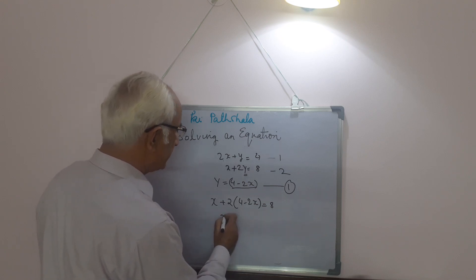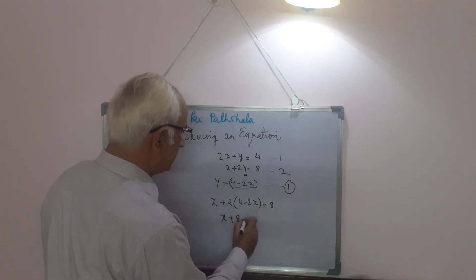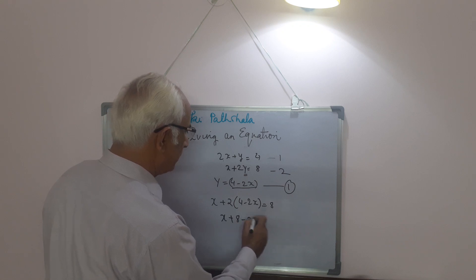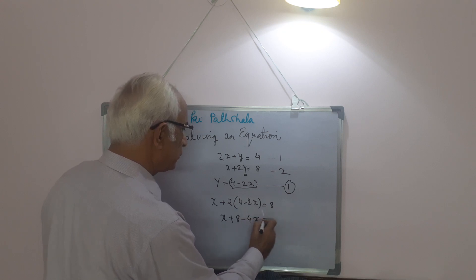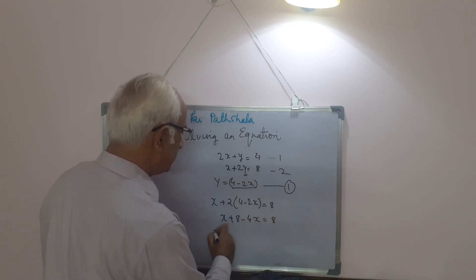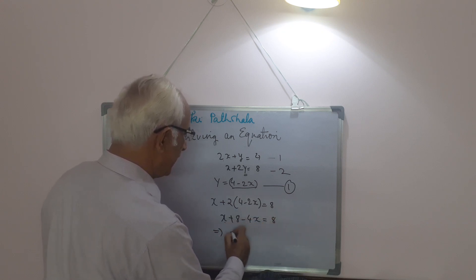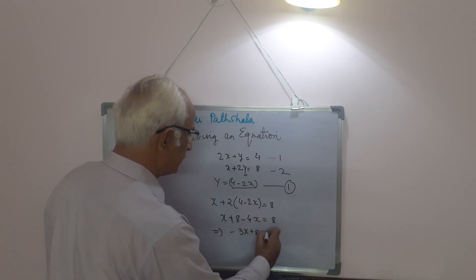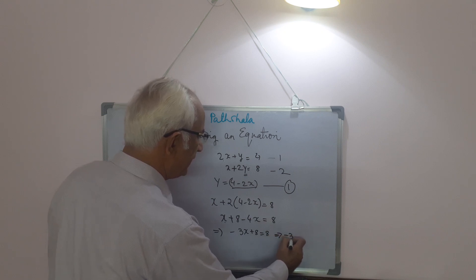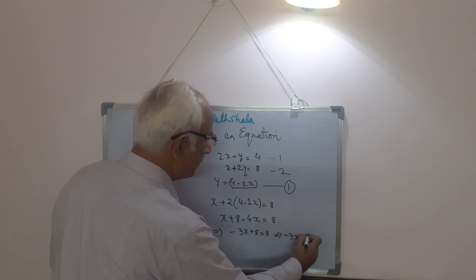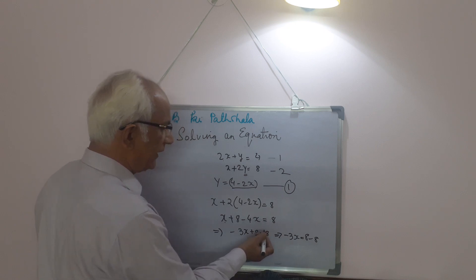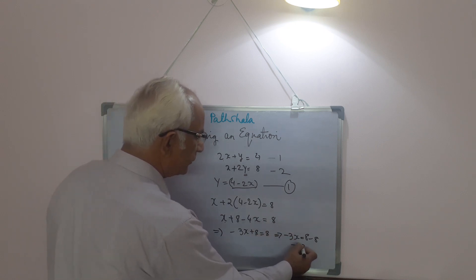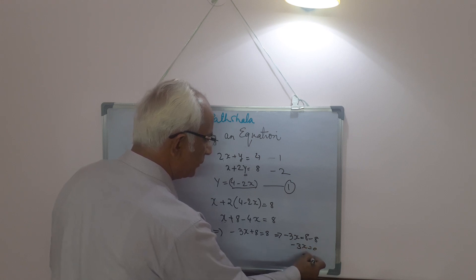So x plus 8 minus 4x is equal to 8, or minus 3x is equal to 8 minus 8. We transpose the 8 to the right side, so minus 3x is equal to 0, which means x is equal to 0.